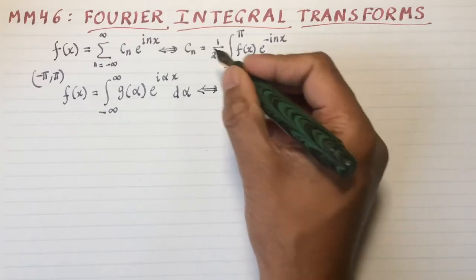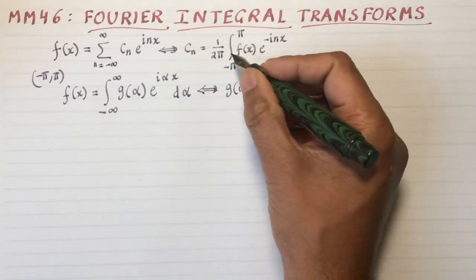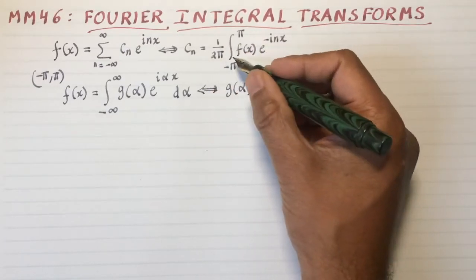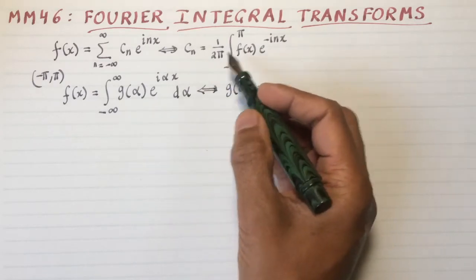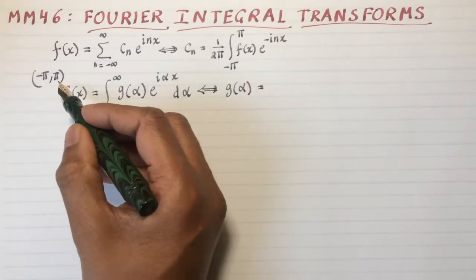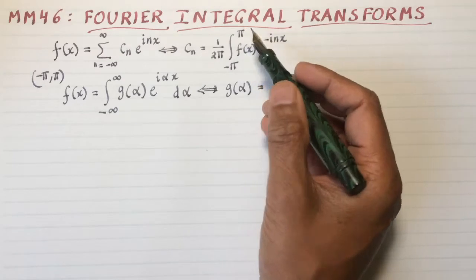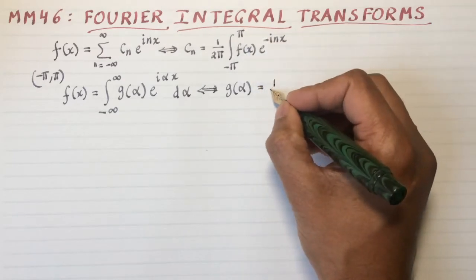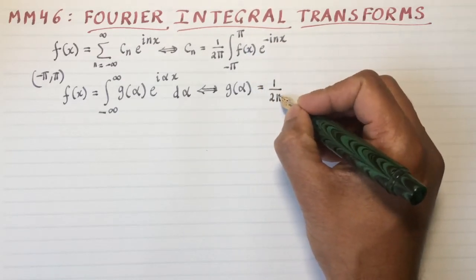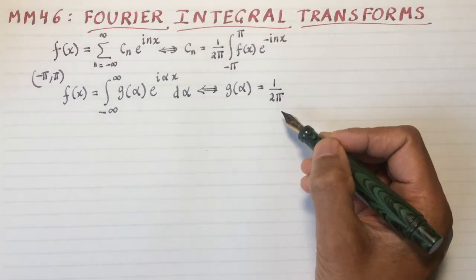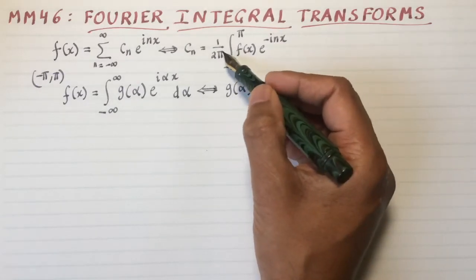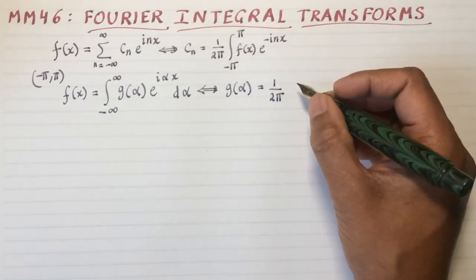So g of alpha is just like c of n. Well, you have to have a normalization factor and this is the only place where we connect up this minus pi to pi with the previous incarnation of the same thing. So you still get 1 over 2 pi as though it's still remembering its humble origins as a discrete object.